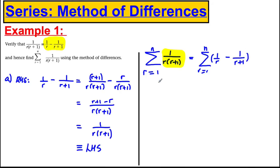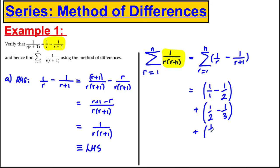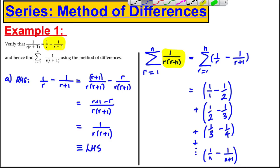We're going to write this out carefully to show why it helps. Putting r = 1: 1/1 − 1/2. Then adding r = 2: 1/2 − 1/3. Then adding r = 3: 1/3 − 1/4. And so on, all the way to the final term r = n: 1/n − 1/(n+1). Now you can see that the −1/2 matches the +1/2 and they cancel. The −1/3 matches the +1/3 and they cancel. Similarly −1/4 will match a +1/4. These diagonals always cancel each other out.